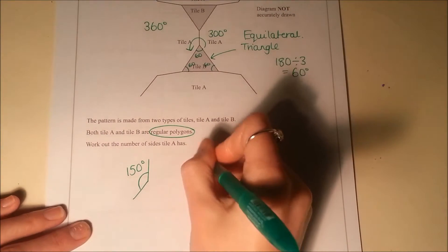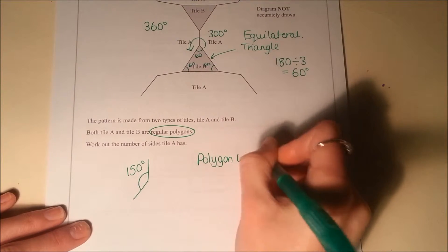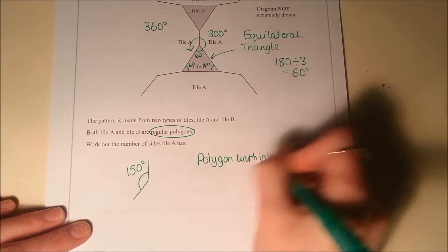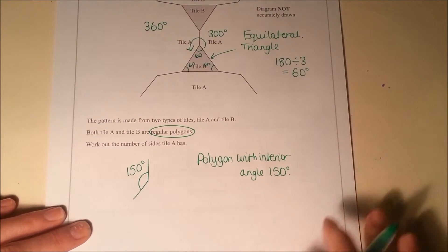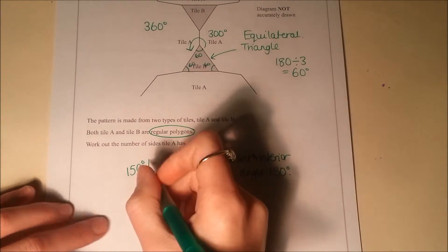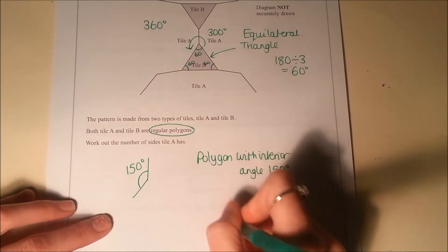So what I'm looking at is I'm looking at a polygon with interior angle of 150 degrees. So when you're looking at regular polygons, the best thing to do is to use the thing for exterior angles.